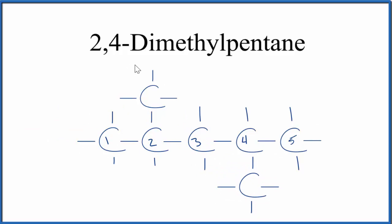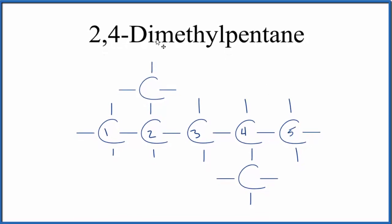This is the structural formula here for 2,4-dimethylpentane. So to recap, we have our pentane, five carbons, single bonded. And on the second and fourth carbon, we put our methyl group, one here and one here.